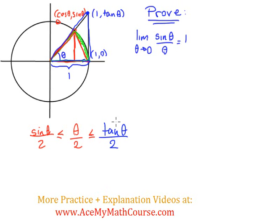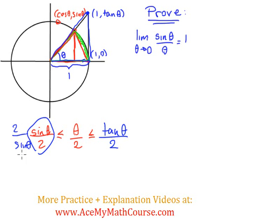So far we still have no sign of sin(θ)/θ. So here's what we're going to do: multiply all these elements by 2/sin(θ). Sin(θ)/2 times 2/sin(θ) is just 1. Then 2/sin(θ) times θ/2 — the 2's cancel — and we get θ/sin(θ).